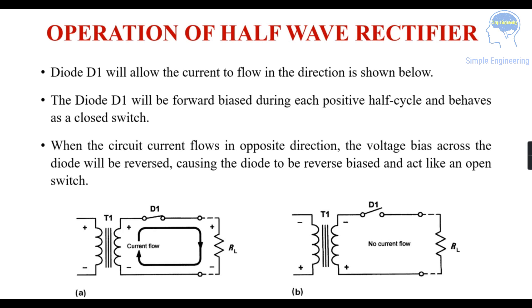Looking at the operation of the half-wave rectifier: in figure A, there is a step-down transformer and a diode. When the diode is forward biased during the positive half-cycle, it acts as a closed switch and current flows from the diode D1, through the resistance RL, from positive to negative.